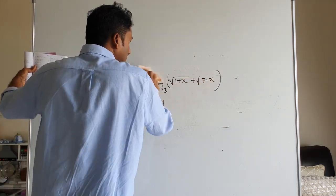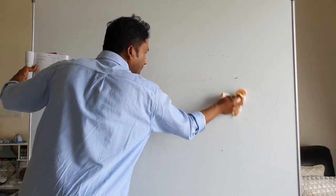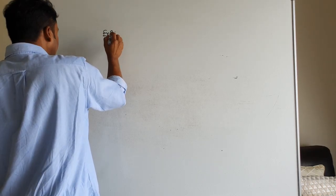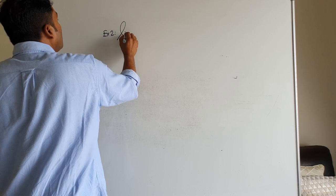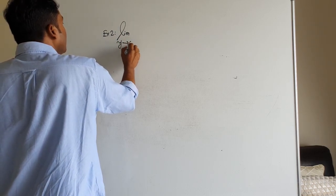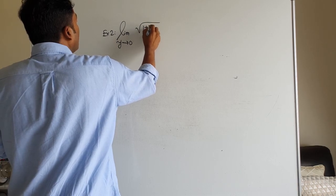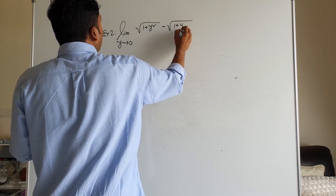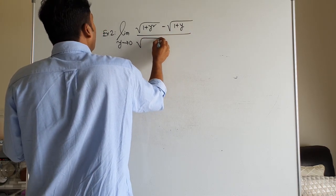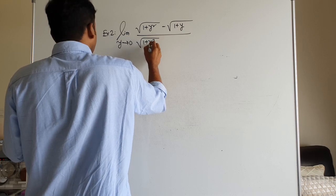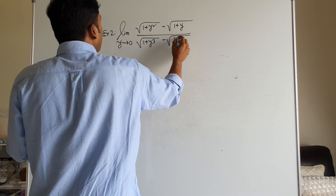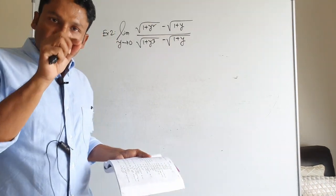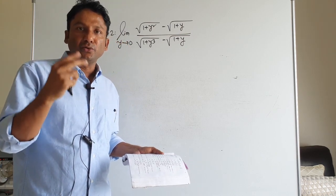My students, I have to do it. Example number two: find the limit as y tends to zero of root over one plus y squared minus root over one plus y, divided by root over one plus y cubed minus root over one plus y. Now, here you can see square root over two, square root over two.